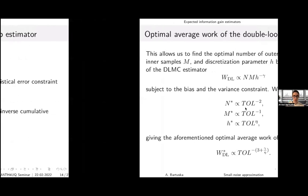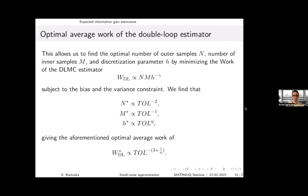We optimize the work — given by the number of outer samples times the number of inner samples times the mesh discretization work per forward model evaluation — subject to bias and variance constraints. We find that the number of outer samples is of order tolerance to the minus two, inner samples of order tolerance to the minus one, and the discretization of order tolerance to the eta — the weak rate of the PDE solver. This yields the aforementioned cost bound.